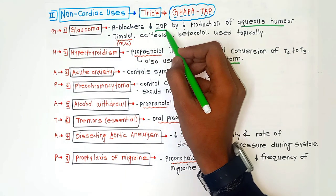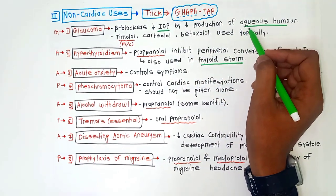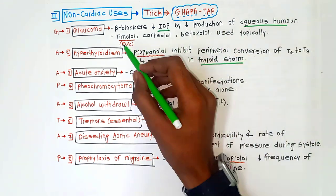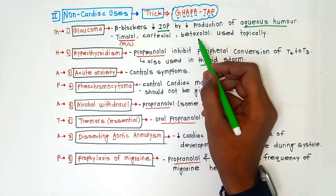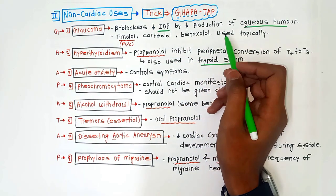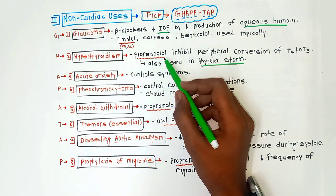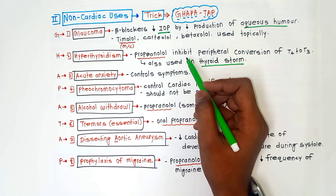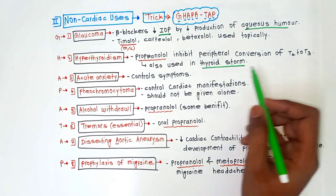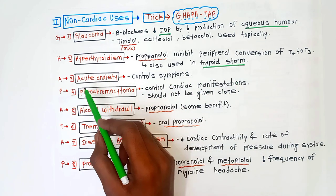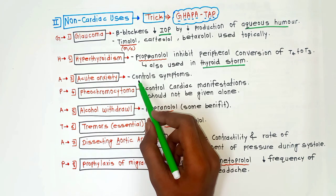For glaucoma, beta blockers decrease the intraocular pressure (IOP) by decreasing the production of aqueous humor in the eye. Timolol is most commonly used; cartiolol and betaxolol are also used topically. For hyperthyroidism, propranolol is used — it inhibits the peripheral conversion of T4 to T3, and it is also used in thyroid storm.